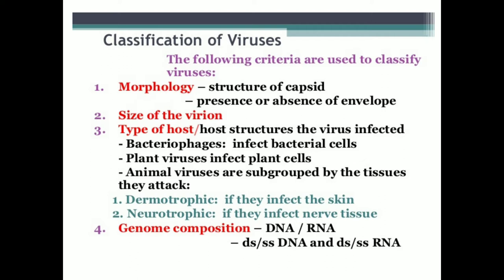The third criterion is on the basis of type of host or host structure. On the basis of which type of host the virus infects, we classify the virus. The first category is bacteriophage — the virus which attacks bacterial cells is called a bacteriophage. The bacterial cell acts as a host for virus multiplication and development.